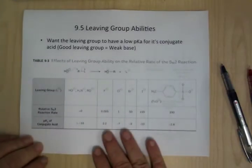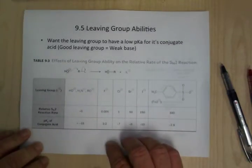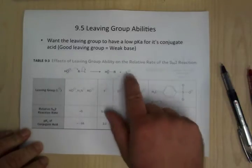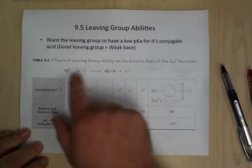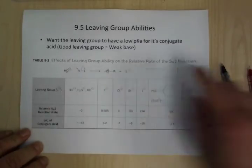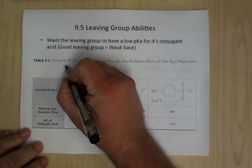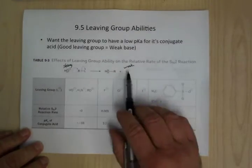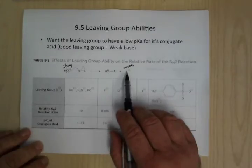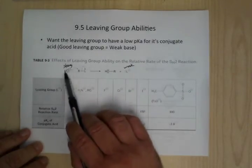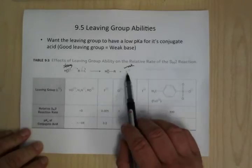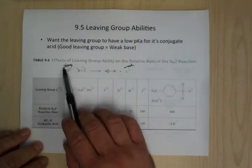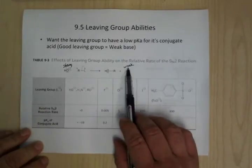Starting off, we're talking about leaving group abilities. As a reminder, what you really want in a leaving group is a weak base. You want to have a strong base or nucleophile on one side, and you want to end up with a weak base. If you ended up with a strong nucleophile, it would just react and go back. So you really want to go from strong nucleophile to weak.